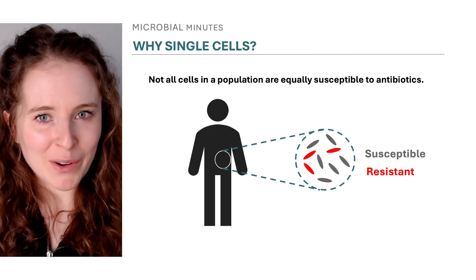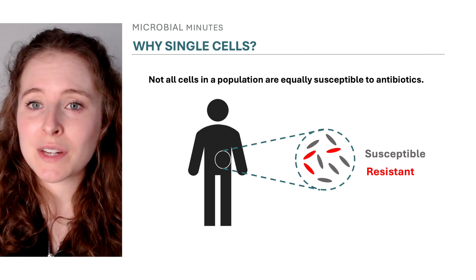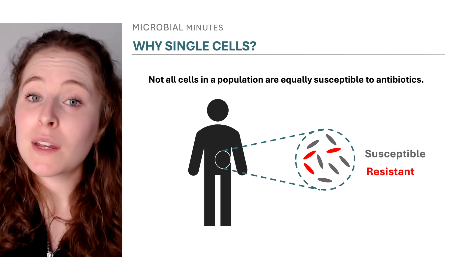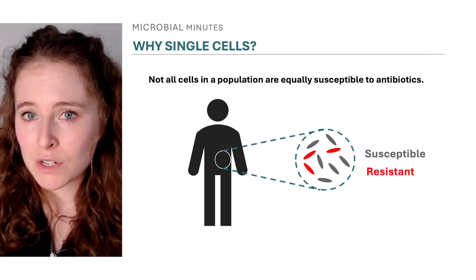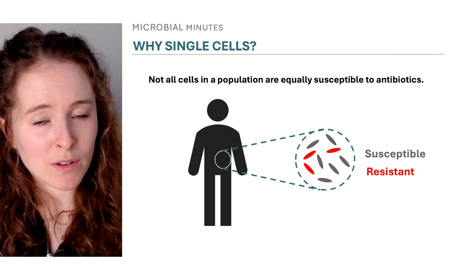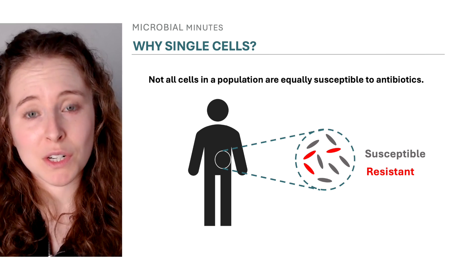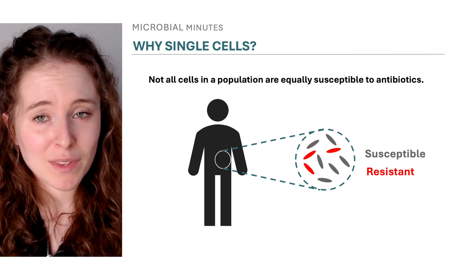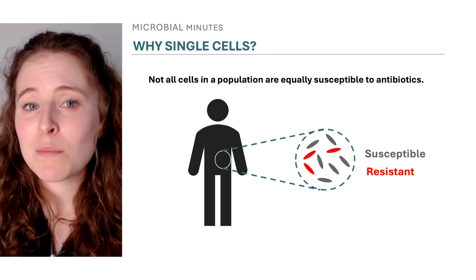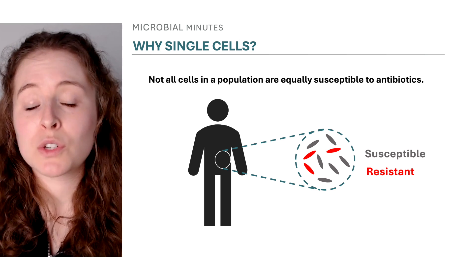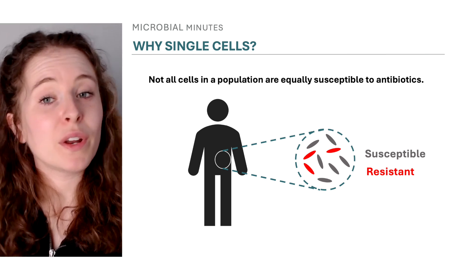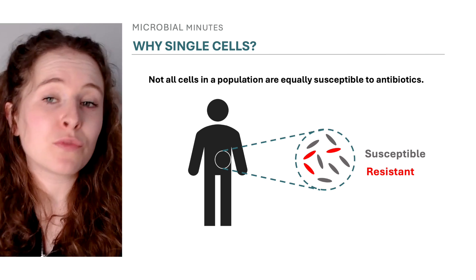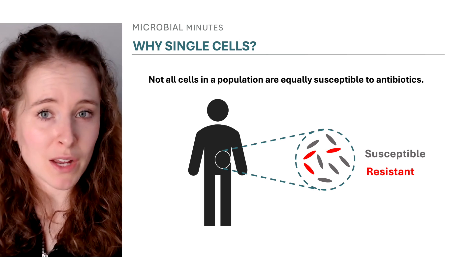Why would that matter? Traditional AST tactics look at an entire bacterial population or community, but many clinical isolates contain subpopulations of cells that are more resistant to a given antibiotic than the larger population. These small, stubborn groups can promote drug resistance and treatment failure. Detecting them is key, as it may be that a mix of antibiotics are needed to treat an infection. Honing in on antibiotic susceptibility and resistance at the single cell level could inform how best to handle this heterogeneity.